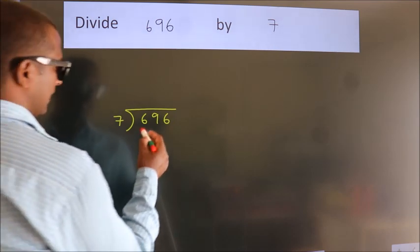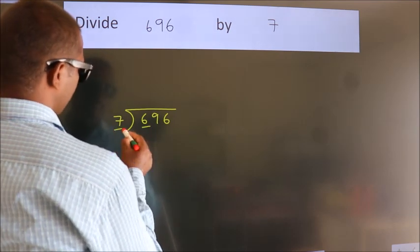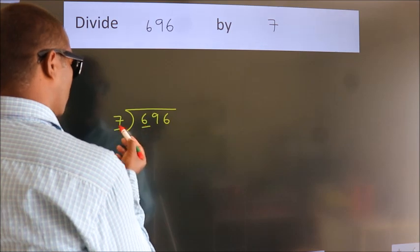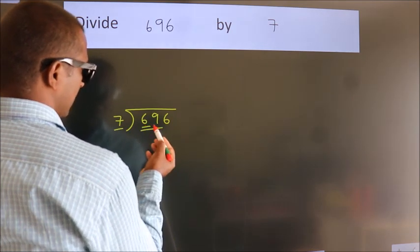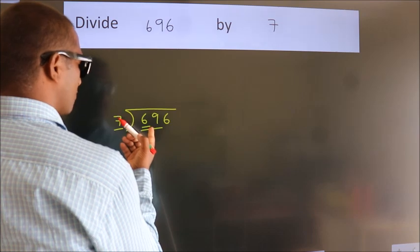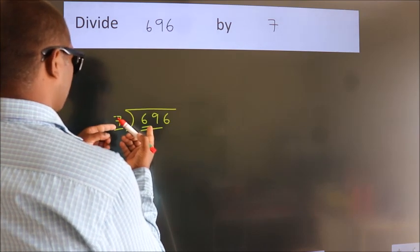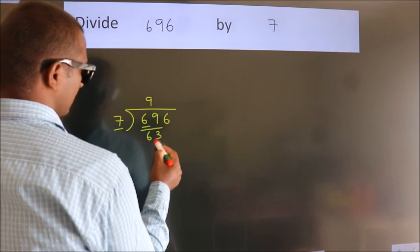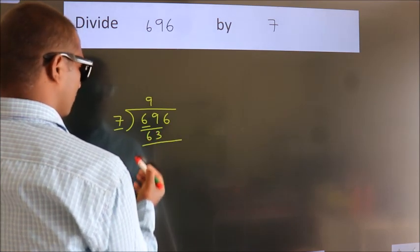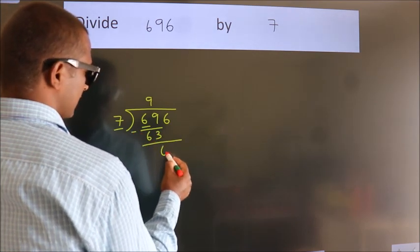Next, here we have 6, here 7. 6 is smaller than 7, so we should take two numbers as 69. A number close to 69 in the 7 table is 7 nines, 63. Now we should subtract. We get 6.